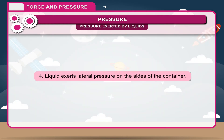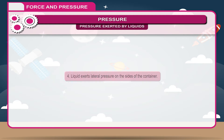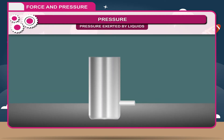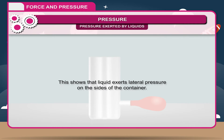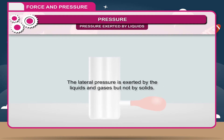4. Liquid exerts lateral pressure on the sides of the container. Activity: Take a metallic tube with a small opening near the base. Tie a rubber balloon to the side opening and put some water in the tube. You will observe that the balloon starts inflating as you increase the amount of water. This is due to the fact that liquid applies pressure on the side walls also. The lateral pressure is exerted by liquids and gases, but not by solids.